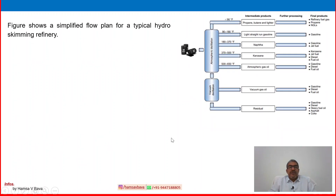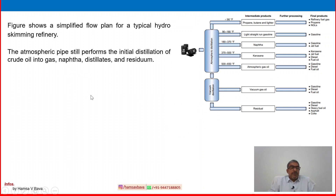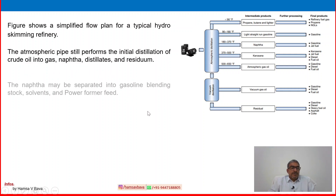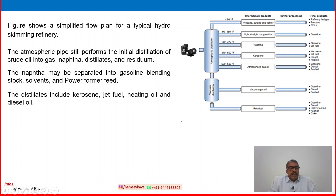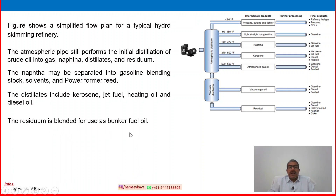The figure shows a simplified flow plan of a typical hydroskimming refinery. The atmospheric pipe still performs the initial distillation of crude oil into gas, naphtha, distillate, and residue. The naphtha may be separated into gasoline blending stock, solvent, and power-former feed. The distillate includes kerosene, jet fuel, heating oil, and diesel oil. The residue is blended to use as bunker fuel oil.